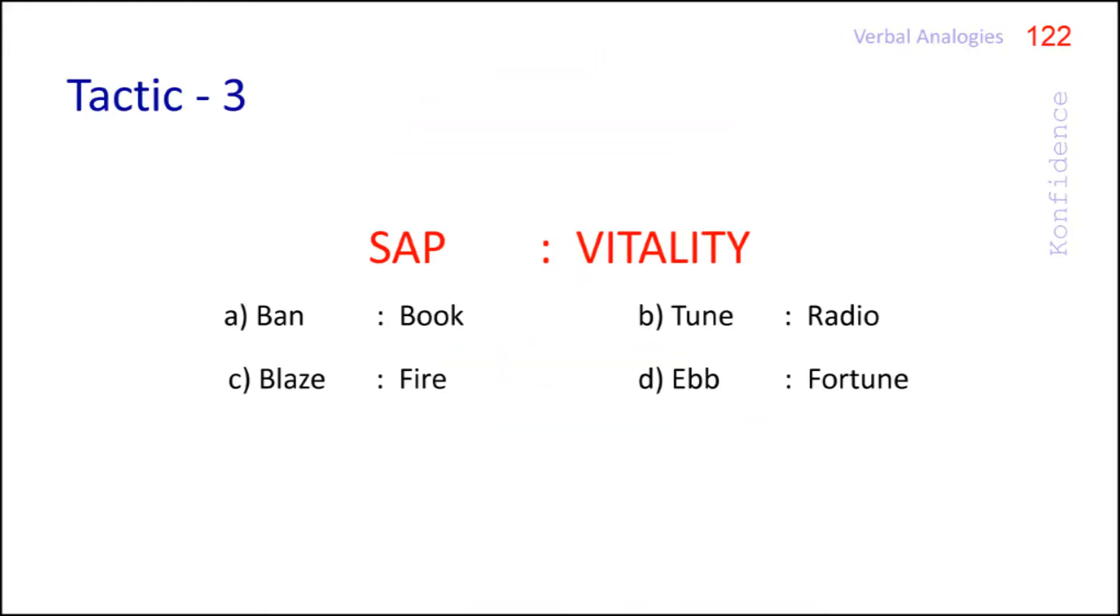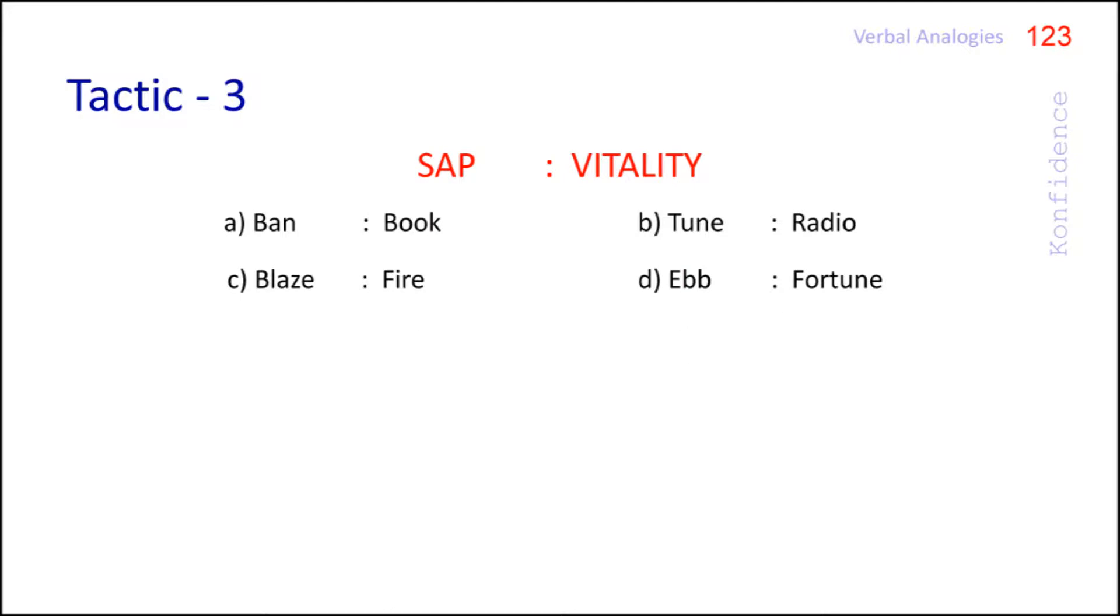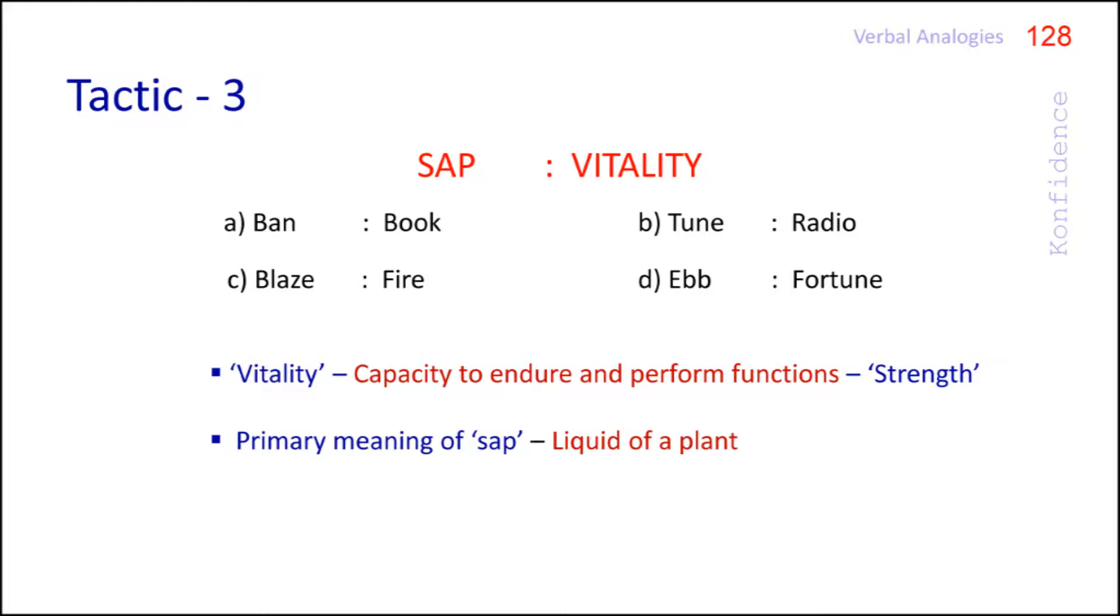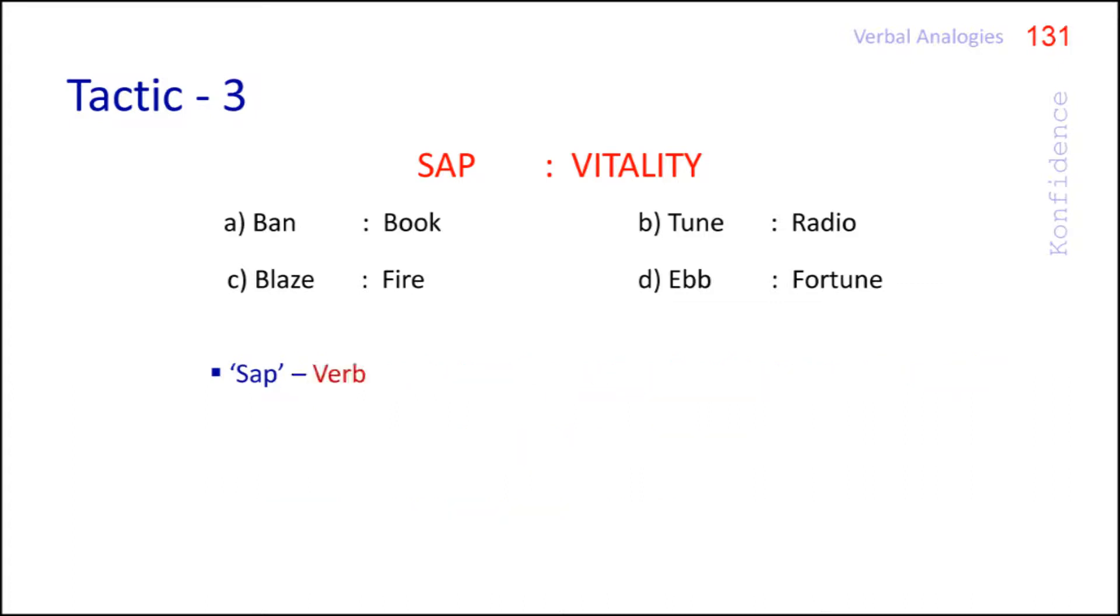Look at the example. Sap vitality. Vitality means capacity to endure and perform functions. So here it means strength. The primary meaning of sap is liquid of a plant. It also means tunnel, silly person, etc. Do these meanings help us to identify the relationship between the question pair? Surely not. Therefore, we should think about some other meaning of that word. If we take sap as a verb, it means decrease or become weak. So sap the vitality means decrease the strength.